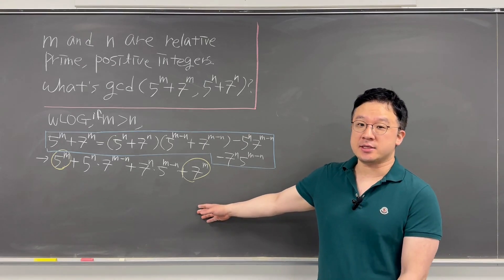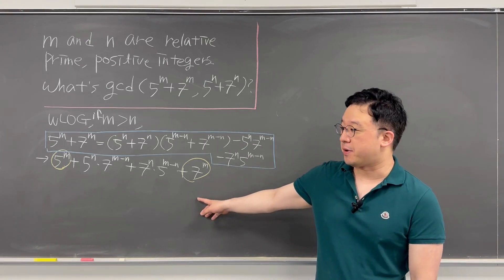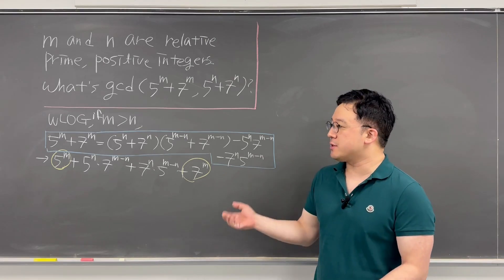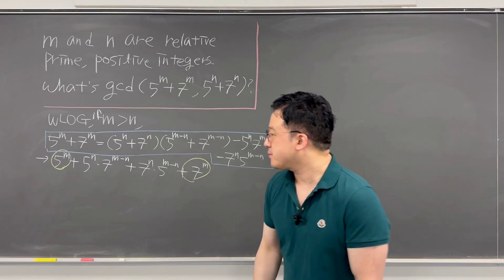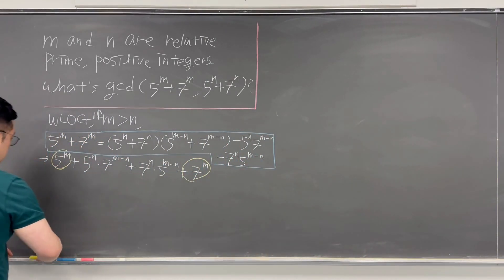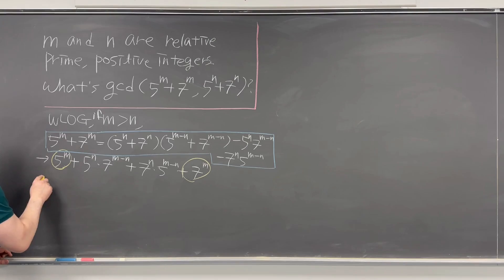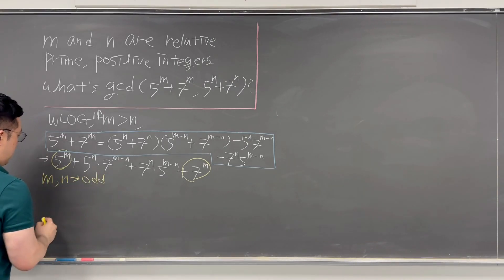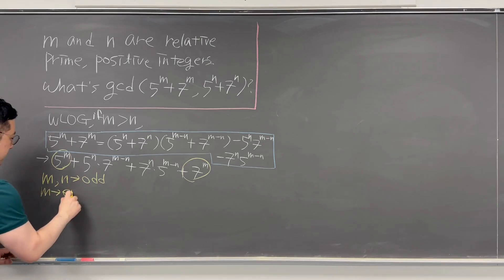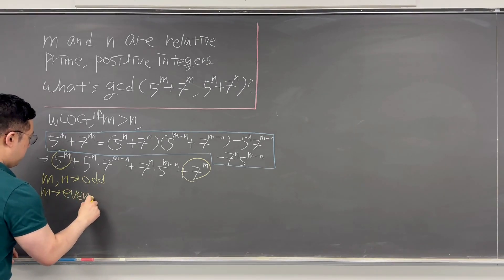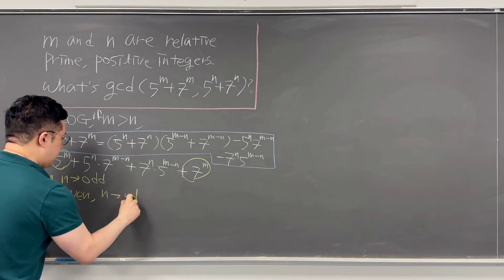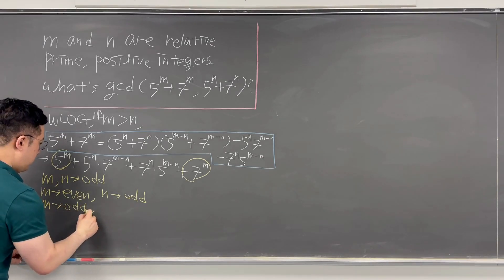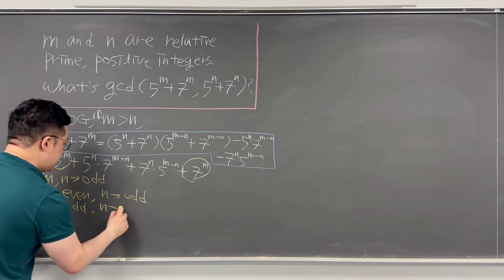We can talk about three cases: when both M and N are odd numbers; when M is even and N is odd; or when M is odd and N is even.